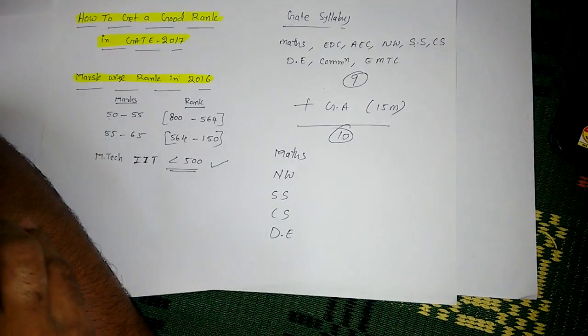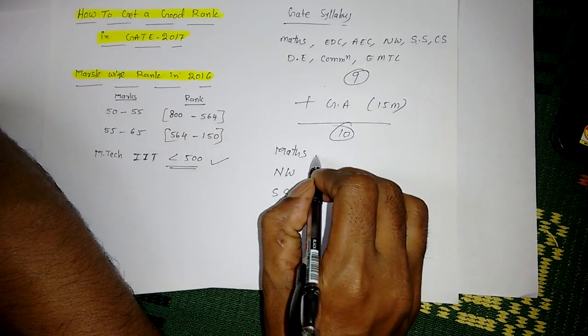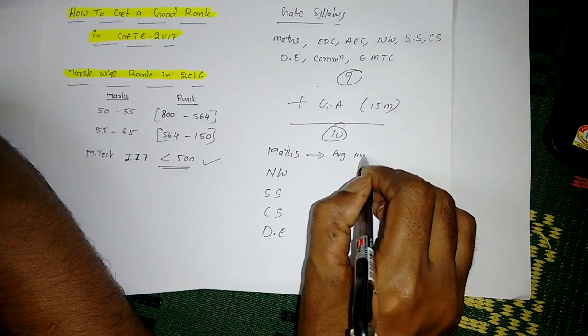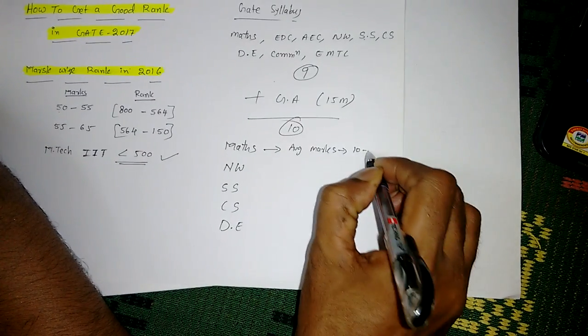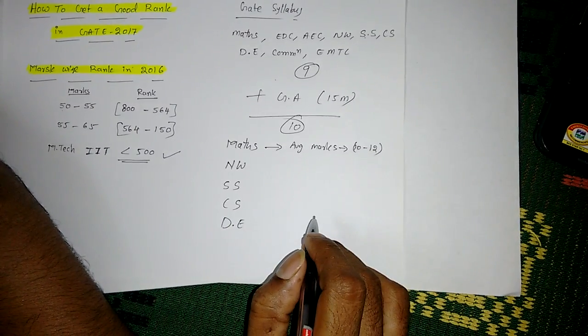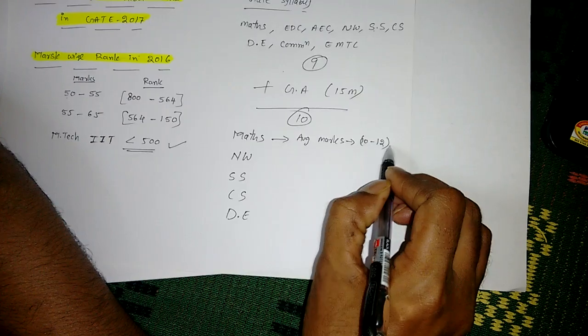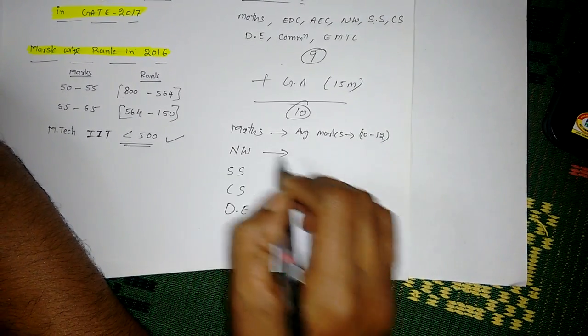If you take Mathematics, the average marks in Mathematics will come is 10 to 12. If you aim for these 12 marks, at least you will get 10 marks. So from Mathematics you can score maximum 10 marks.